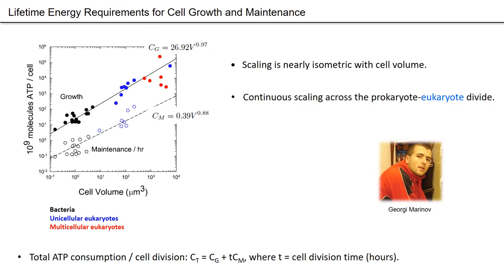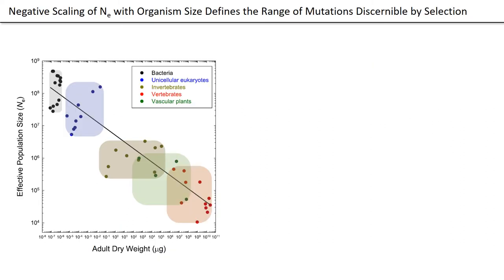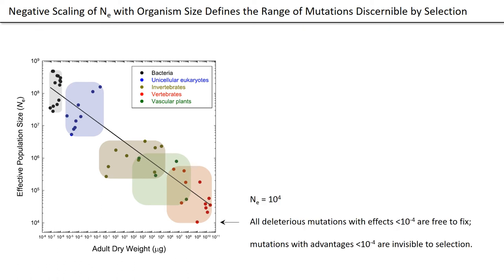We know quite a bit about the cost of building cells now from microbial physiology. The cost scales essentially linearly with cell volume across the entire tree of life. What we are interested in is the scaling of mean phenotypes with effective population size and organism size. From our prior work, we know there's a negative association between NE and adult dry weight. What this means is: if you live with an NE of 10^4, all deleterious mutations with effects less than 10^-4 are free to fix, whereas mutations with advantages less than 10^-4 are invisible to selection.